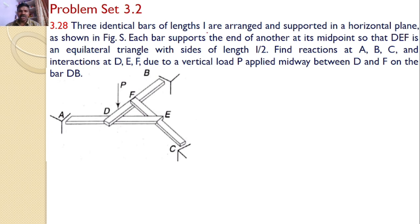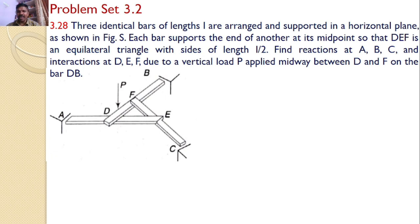Three identical bars of lengths L are arranged and supported in a horizontal plane as shown in the figure. Each bar supports the end of another at its midpoint so that D, E, F is an equilateral triangle with sides of length L/2. Find reactions at A, B, C and interactions at D, E, F due to a vertical load P applied midway between D and F on the bar DB.